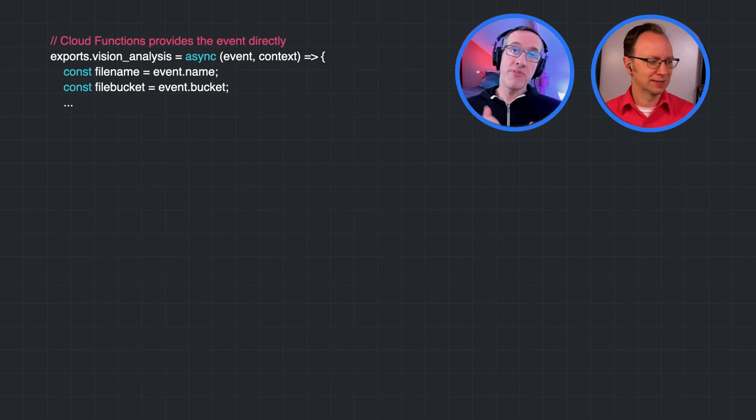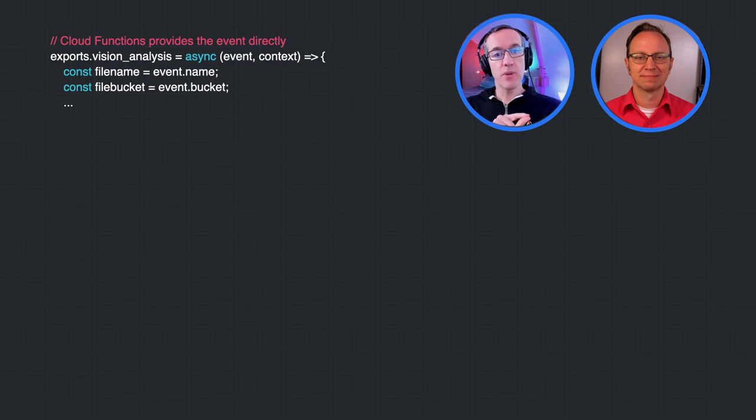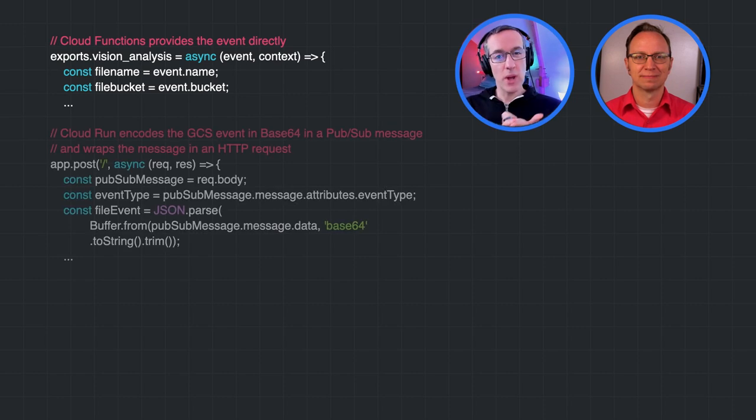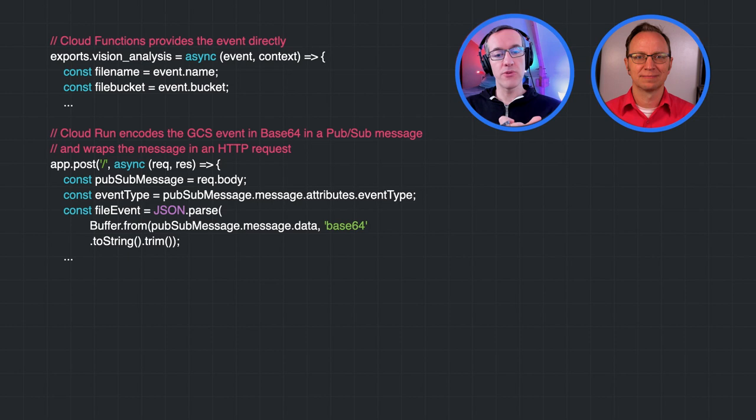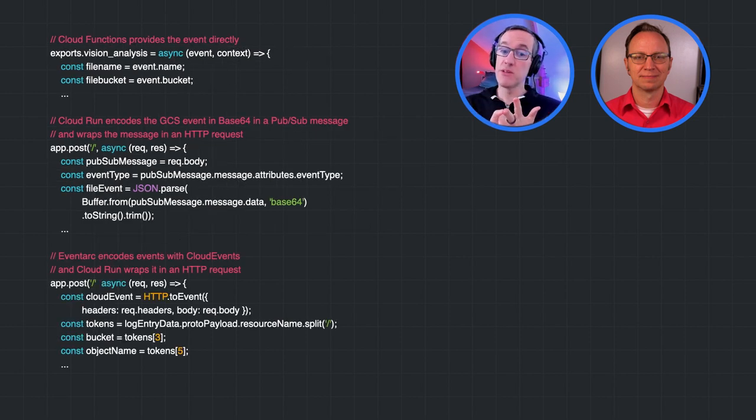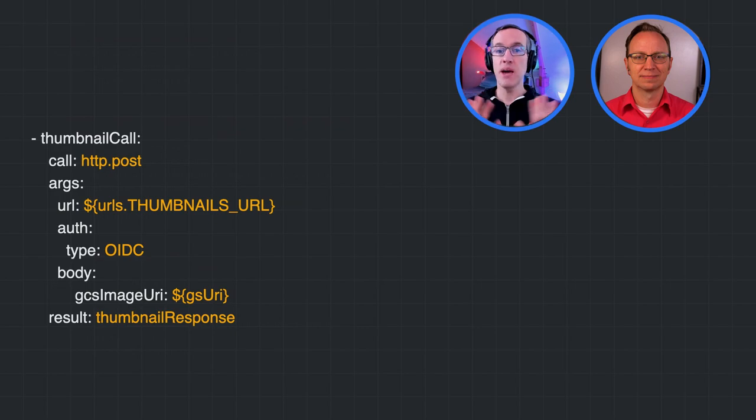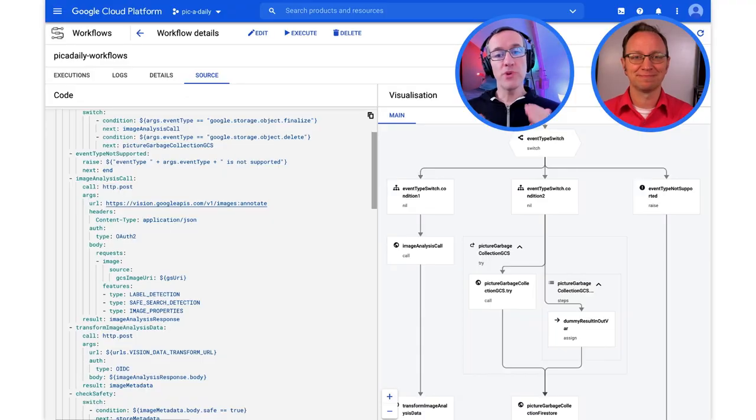True, less event handling. Before, with the choreography approach, we had three different ways to handle events. Direct events from Cloud Functions, PubSub-wrapped GCS event from Cloud Run, and also Cloud Events payloads with Event Arc to Cloud Run. Now it's REST API calls. That sounds awesome. So what did you learn from this experience? It was super refreshing to call the microservices via REST, instead of different event handling approaches.